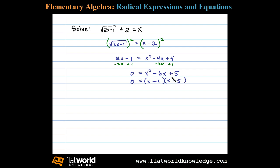Negative 1 times negative 5 is positive 5. Once we have it factored we then set each factor equal to 0. In this case we add 1 to both sides and we have x equals 1. Here if we add 5 to both sides we have x equals 5.